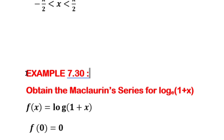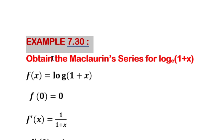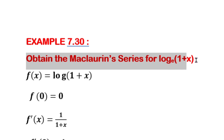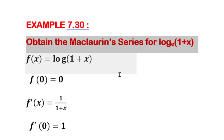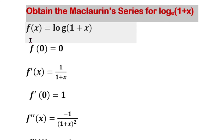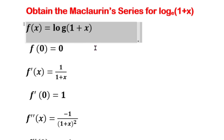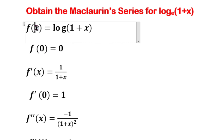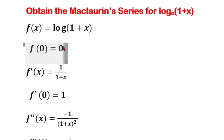Example 7.30: Obtain the Maclaurin series for log of 1 plus x. Given function f of x equal to log of 1 plus x. When you substitute x equal to 0, f of 0 equal to log of 1 plus 0, which is log 1, and the value of log 1 is 0.